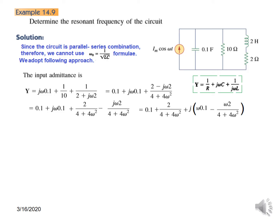These are the j terms, and we know that at resonance the imaginary part of Y has to be zero. That means this term has to be zero, so we put this equal to zero and from here we calculate the value of ω₀.